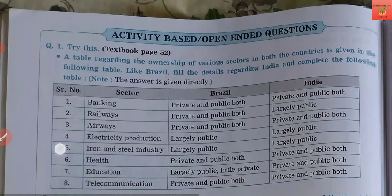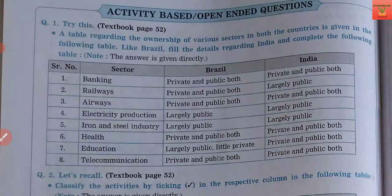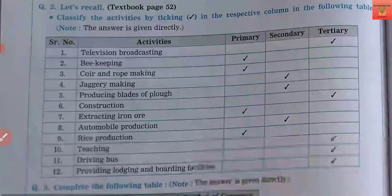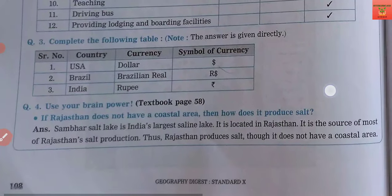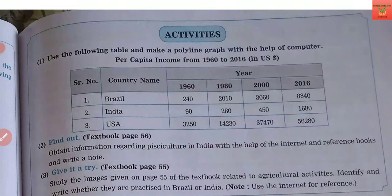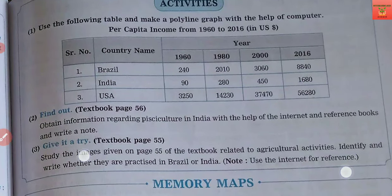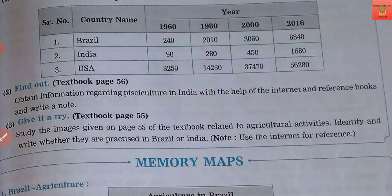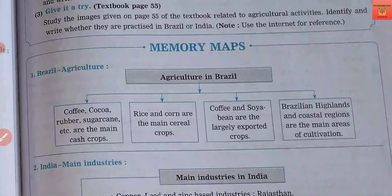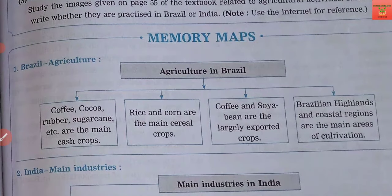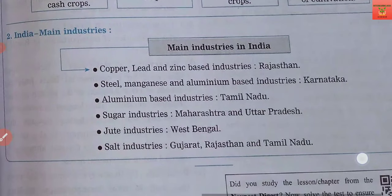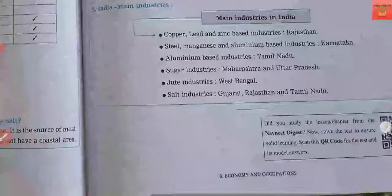Next are open-ended questions, which you mostly get as projects — you can write your project answers here. There are also activities as extra practice. For additional knowledge, you can go to the internet and search for trade between India and Brazil. Coming to our last section — memory maps — these are key points which you have to remember. During revision time, these key points will be very helpful, so save them.